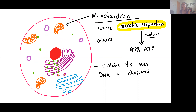Our mitochondrion — listed here in the singular version — is where the process of aerobic respiration occurs. This process is important because it produces the bulk of the ATP that the cell needs, about 95% of ATP production is happening here. ATP stands for our energy molecule, adenosine triphosphate. We'll be talking about aerobic respiration in its own separate chapter, so we'll go into a lot of detail with that.